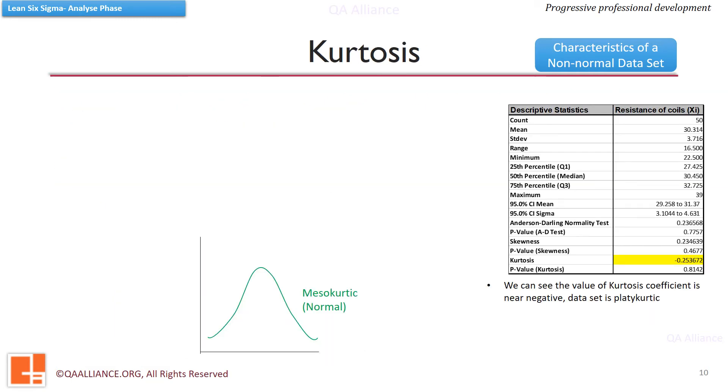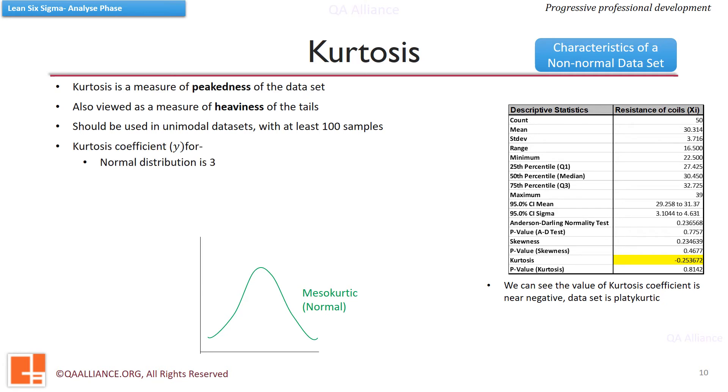Another characteristic about the distribution is peakedness of the data. Kurtosis is the measure of peakedness of the dataset. It is also viewed as a measure of heaviness of the tails. It should be used in unimodal datasets with at least 100 samples. The kurtosis coefficient, gamma, for normal distribution is 3, and the shape of the distribution is mesokurtic.